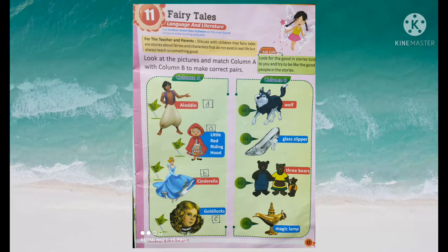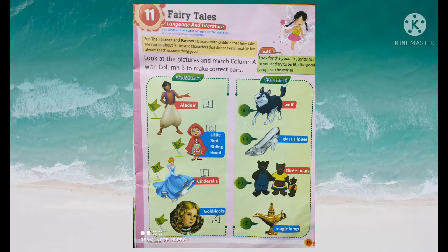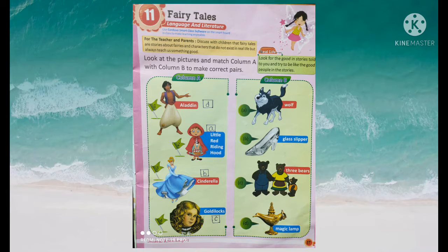Third picture: Cinderella. What happens in Cinderella's story? The answer is option B — glass slippers. Cinderella's match is glass slippers, so we write option B.